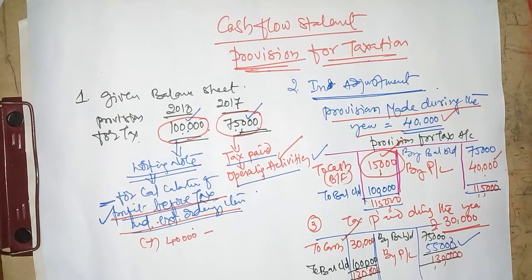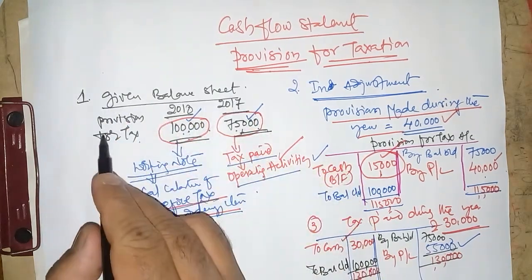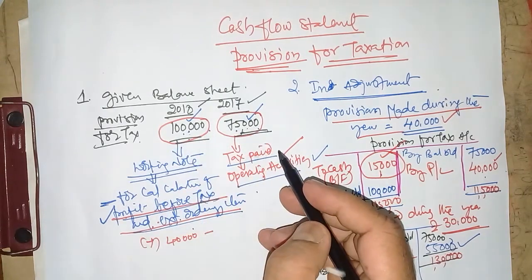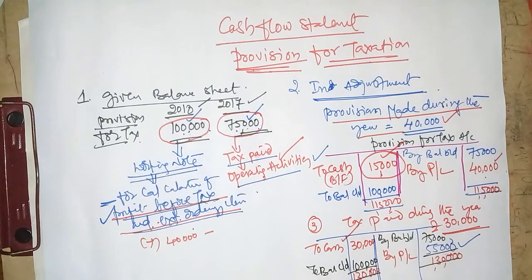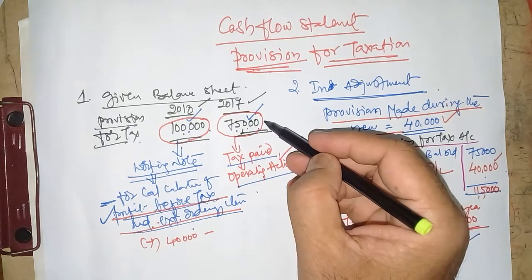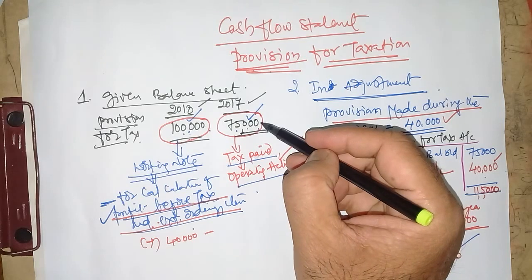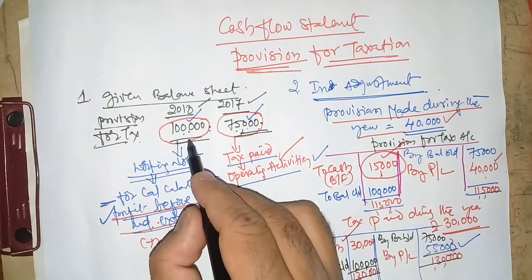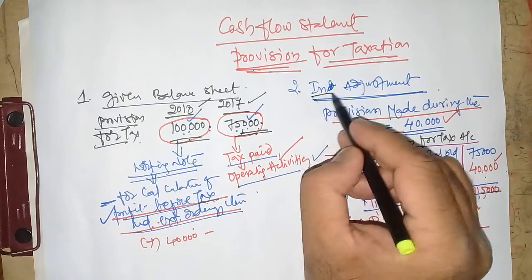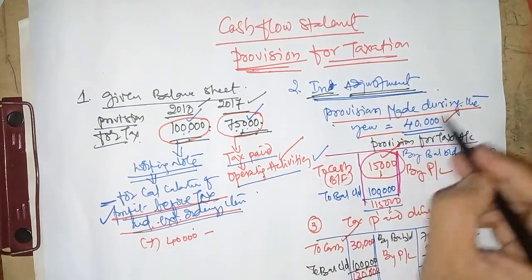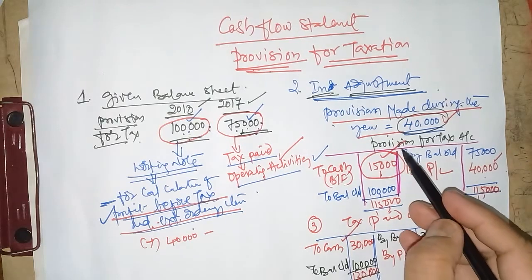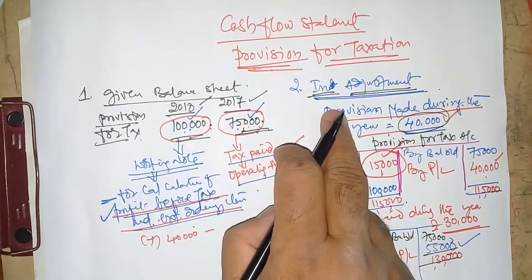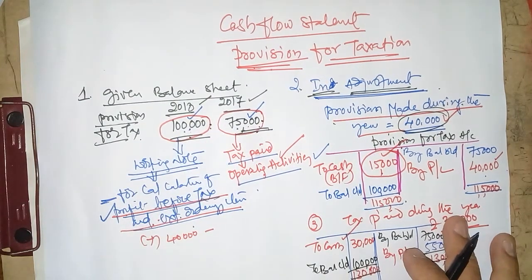Briefly revising once again: Suppose in the balance sheet, provision for taxation for 2017 and 2018 is given — only this amount with no adjustment. In such a case, the opening provision (2017) will be considered as tax paid, and the closing provision will be considered as provision made. If the question gives only balance sheet figures without any adjustment, we need not prepare any provision for taxation account.